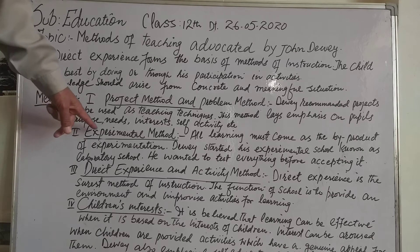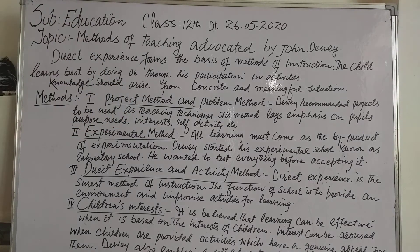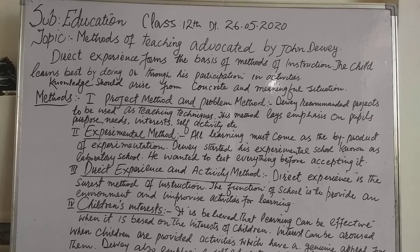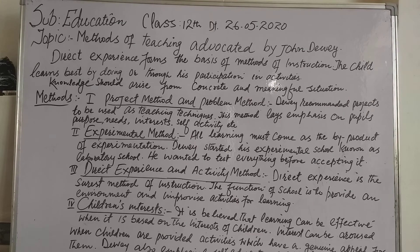Number two: experimental method. He said all learning must come as the byproduct of experimentation. Dewey started his experimental school, known as the laboratory school. He wanted to test everything before finally accepting it. His experimental method is in tune with the holistic method.